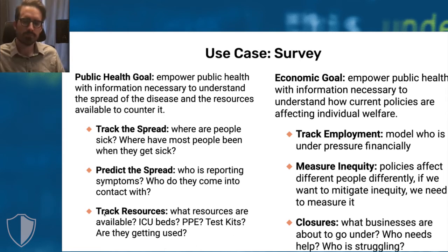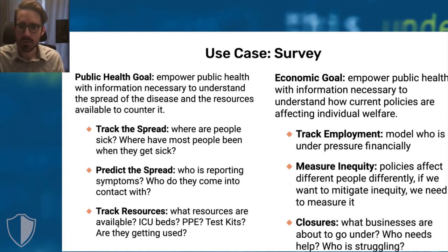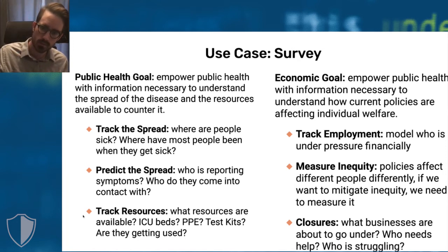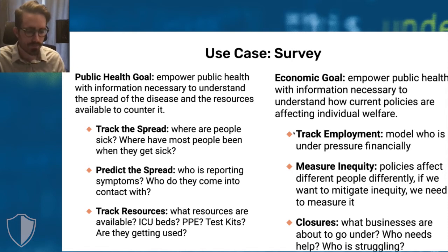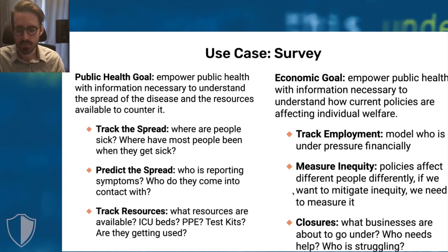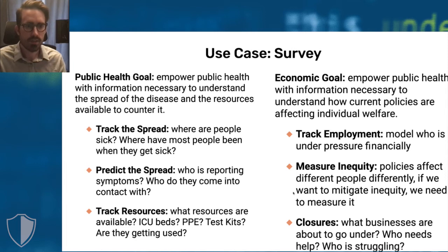Being able to track resources is really interesting. From a public health standpoint, you want to know how bad it is — what are the harms — but also what's the current state of what's at your disposal. On the economic side, it's similar: track employment, how many people are filing for unemployment in an area, how many businesses are likely to close, are there subsets of the community particularly displaced. For example, are frontline health workers able to find childcare?